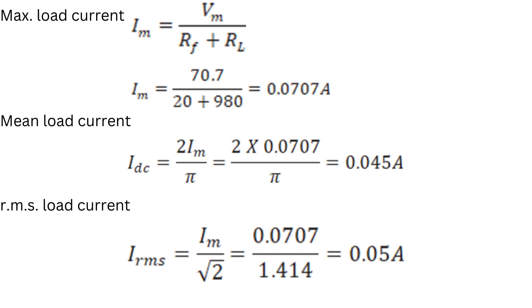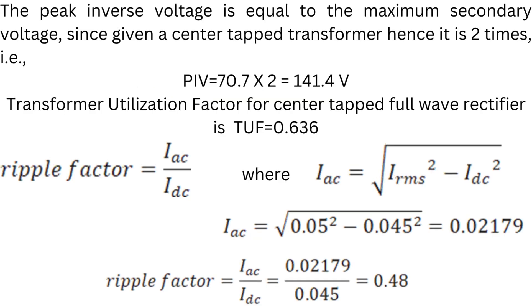Mean load current Idc = 2Im / π = 0.045 amperes. The RMS value of load current Irms = Im / √2 = 0.05 amperes. The peak inverse voltage equals the maximum secondary voltage. Since it is a center-tapped transformer, PIV = 2 × Vm = 2 × 70.7 = 141.4 volts.